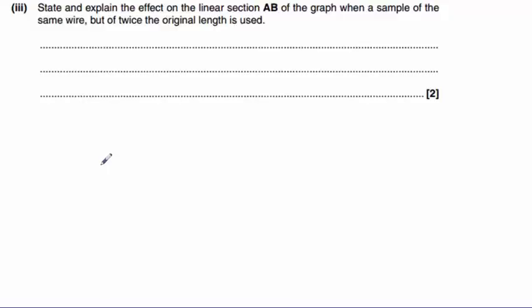Part 3 asks us to state and explain the effect on the linear section A B of the graph, when a sample of the same wire but of twice the original length is used.